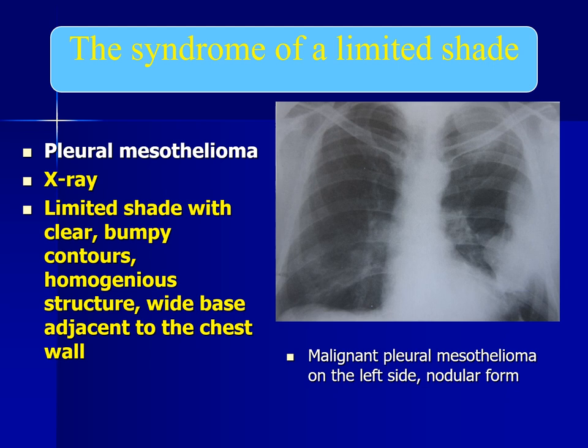A patient with encapsulated pleurisy shows a shade of semispherical or semi-oval shape with a wide base merging with the chest wall, homogeneous structure, and clear contours. The pulmonary pattern in adjacent sections is thickened due to compression and convergence of vascular branches. Another example is pleural mesothelioma: a limited shade with clear bumpy contours, homogeneous structure, and a wide base adjacent to the chest wall — malignant pleural mesothelioma on the left side, nodular form.